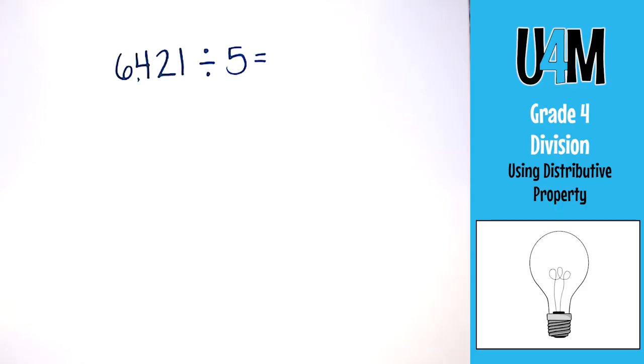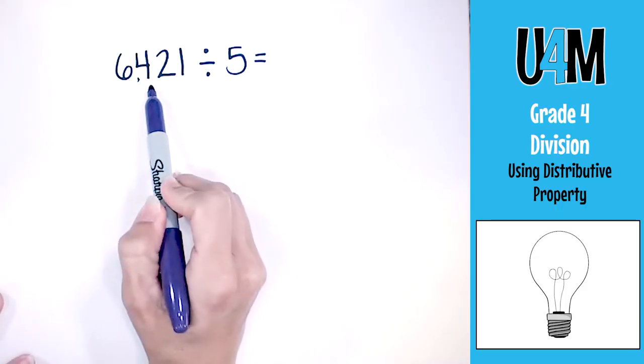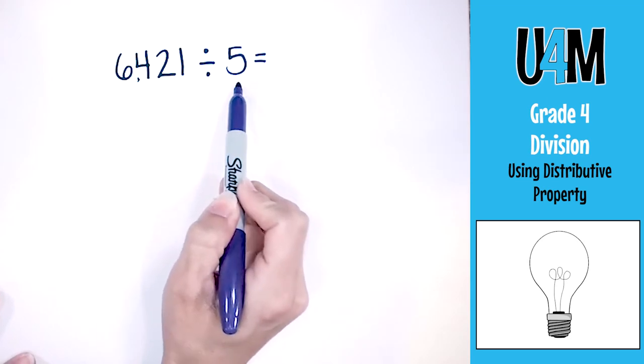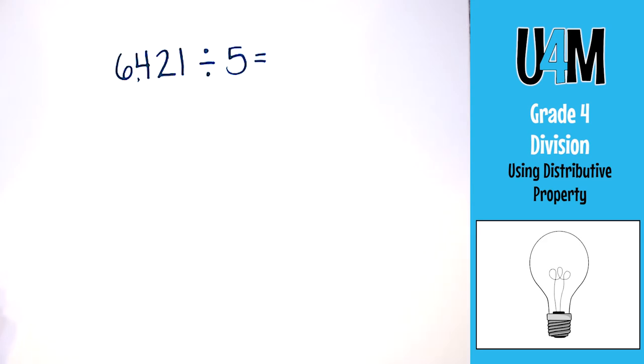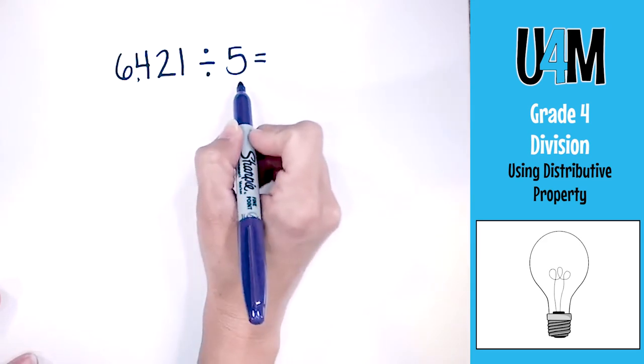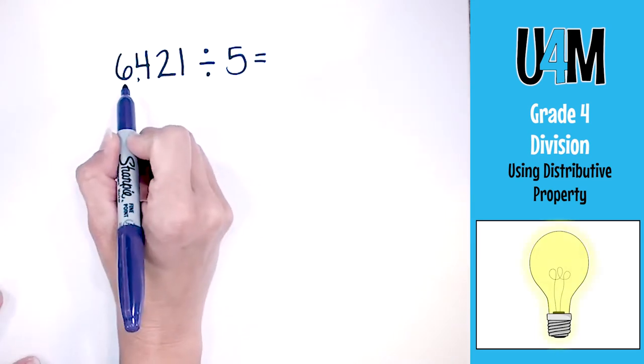So my quotient is 92, and I can check that by multiplying 92 times 3 and I'll get 276. Now that was a problem where we were easily able to see the multiples of 3 that went into the numbers 27 and 6. Now let's look at a problem where it might not be as easy and we might have a remainder. In this problem, we have 6421 divided by 5. Knowing my rules of divisibility, I know this is not going to come out even - I'm going to have a remainder.